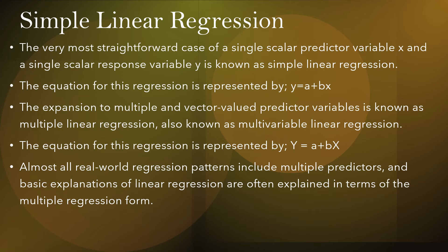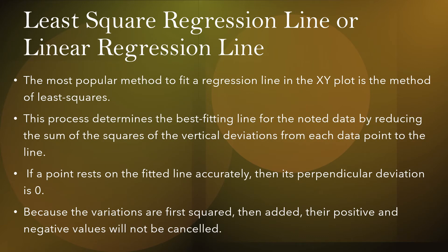What is the least squares regression line? The most popular method to fit a regression line in the xy plot is the method of least squares. This process determines the best fitting line for the plotted data by reducing the sum of squares of the vertical deviations from each data point to the line. If a point rests on the fitted line, its perpendicular deviation is zero. Since variations are first squared then added, positive and negative values are both accounted for.